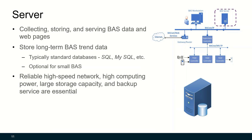A server in a building automation system is used to collect, store, and serve BAS data and web pages. It is used to store long-term BAS trend data. Typically you have a standard database like SQL or MySQL, though this is optional for small systems. For a BAS server, reliable high-speed network, high computing power, large storage capacity, and backup service are essential.